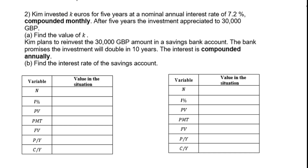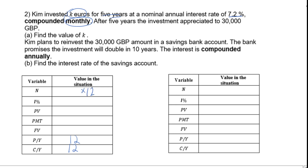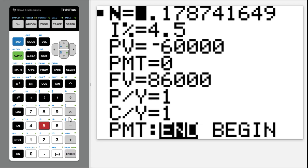Let's go to question 2. Kim invested K euros for 5 years at a nominal annual interest rate of 7.2% compounded monthly, which means k equals 12. So N equals 5 times 12. After 5 years, the investment appreciated to $30,000 GBP. We need to find the value of K. The number of compounding periods is 5 times 12, interest rate is 7.2, and FV is 30,000 GBP.